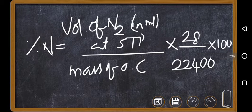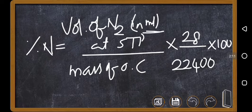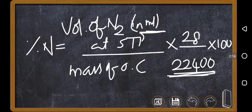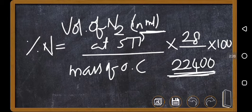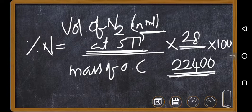Volume of nitrogen in milliliters, if you are taking in liters, it must be 22.4. So, we are taking in milliliters, so we are writing 22,400. Volume of nitrogen in milliliters at STP, this is again important condition, divided by mass of organic compound, times 28, by 22,400, times 100.